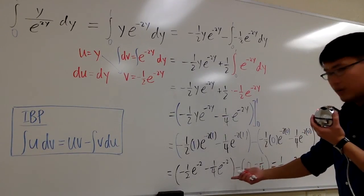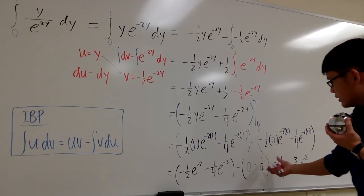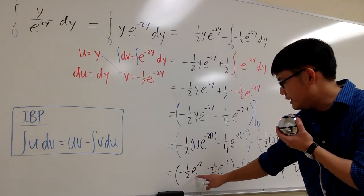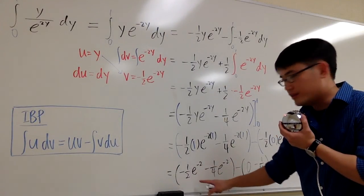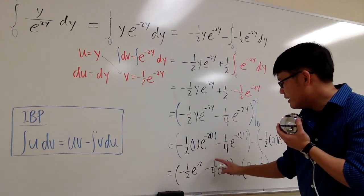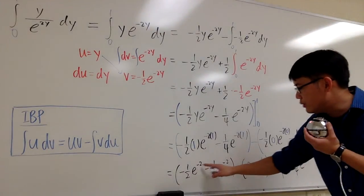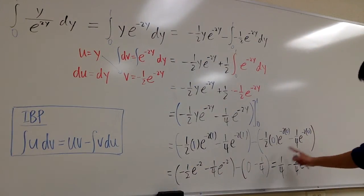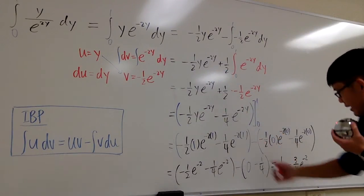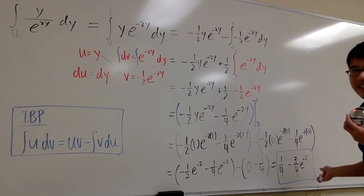And this is how we will do it. We are minusing a negative 1 fourth, so we will get a positive 1 over 4. These two, because they both have e to the negative 2, so we can just combine the numbers in front. Negative 1 half minus 1 fourth, it's going to give us negative 3 fourths, and then we maintain the e to the negative 2. So, this right here will be the exact answer for the integral. And we are done. So we will box this for the answer. And as usual, this is it.